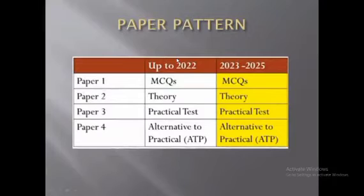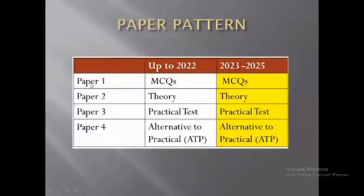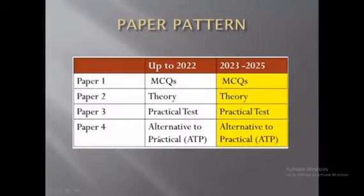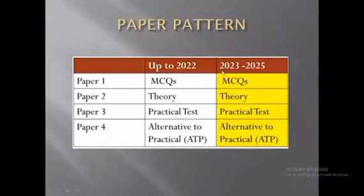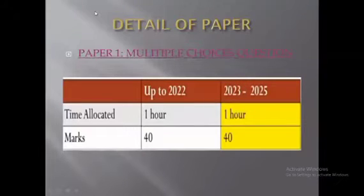Let's come to the paper pattern. For O-Level Physics 5054, we have generally four papers and candidates appear in three papers. Paper one is MCQ-based, paper two is theory-based, paper three is practical test-based, and paper four is alternative to practical. Candidates mainly attempt paper one, paper two, and paper four. There are a few changes in the paper from 2023 to 2025.